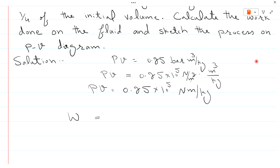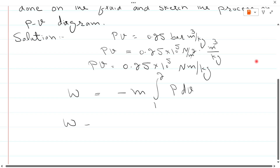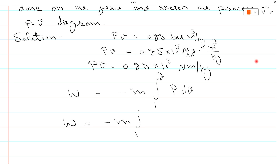Work done from state 1 to state 2 is equal to minus m times the integral from v1 to v2 of P dV. Since PV = 0.25, we can write P = 0.25 / v.